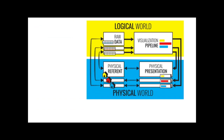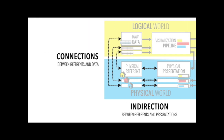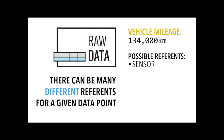Our conceptual model also allows us to really consider the connections between reference and data, as well as more systematically compare the indirection between reference and physical presentations. One key point: when thinking about the relationship between raw data and reference, there isn't necessarily just one referent for any data point — there might be many. Take automobile mileage: this number might be associated with the sensor capturing it, but there are also tasks where it's more useful to think about the vehicle, the tires, the roads, or the driver over which those miles were accumulated. All of these might be useful depending on the task.